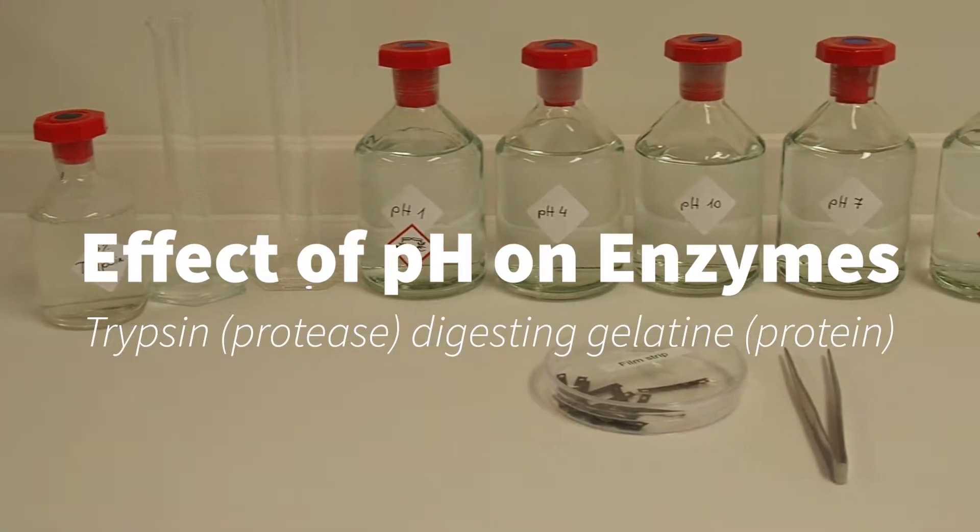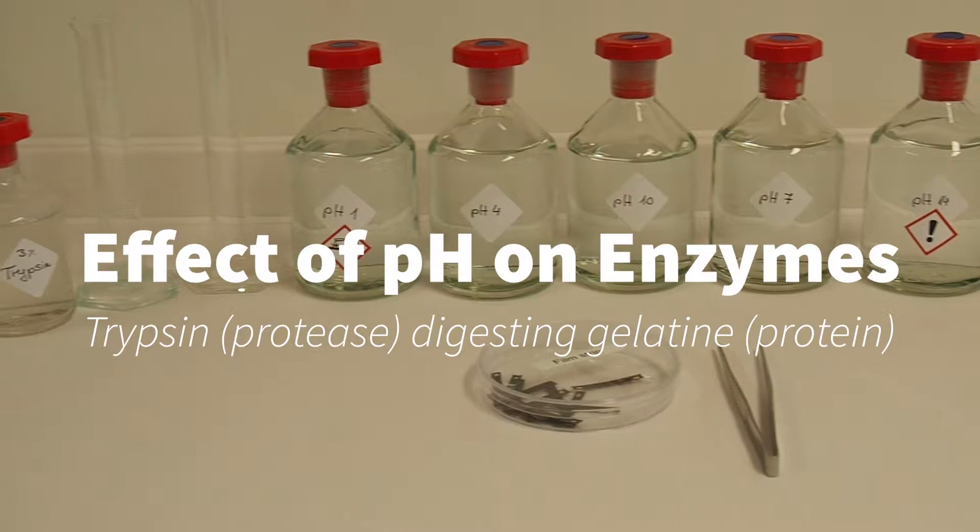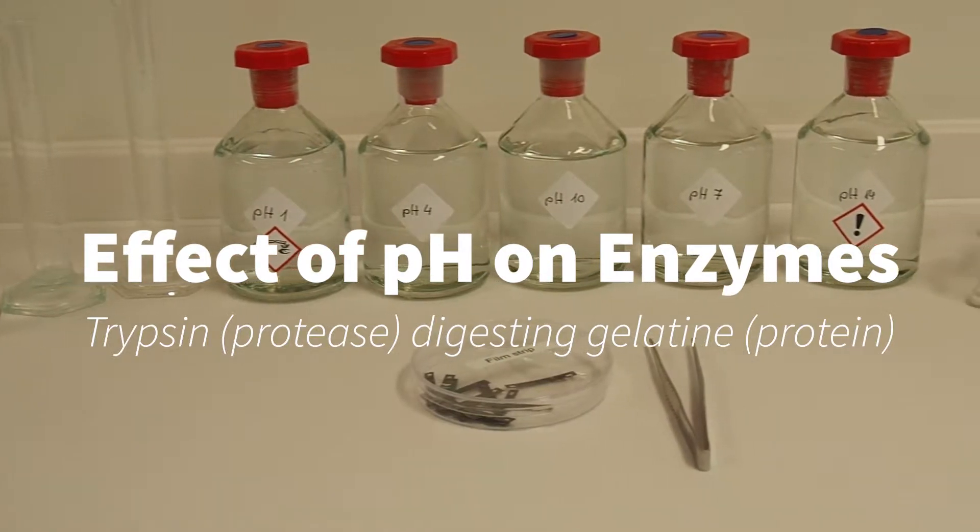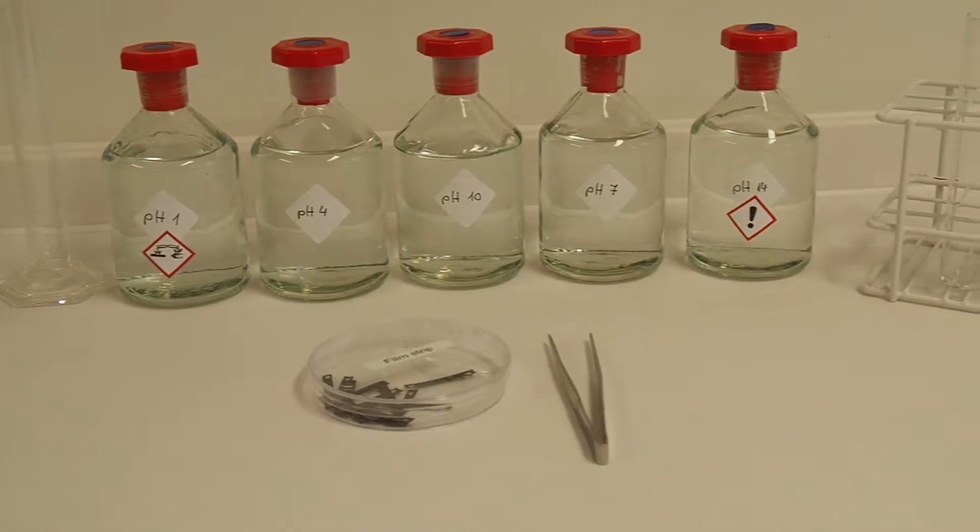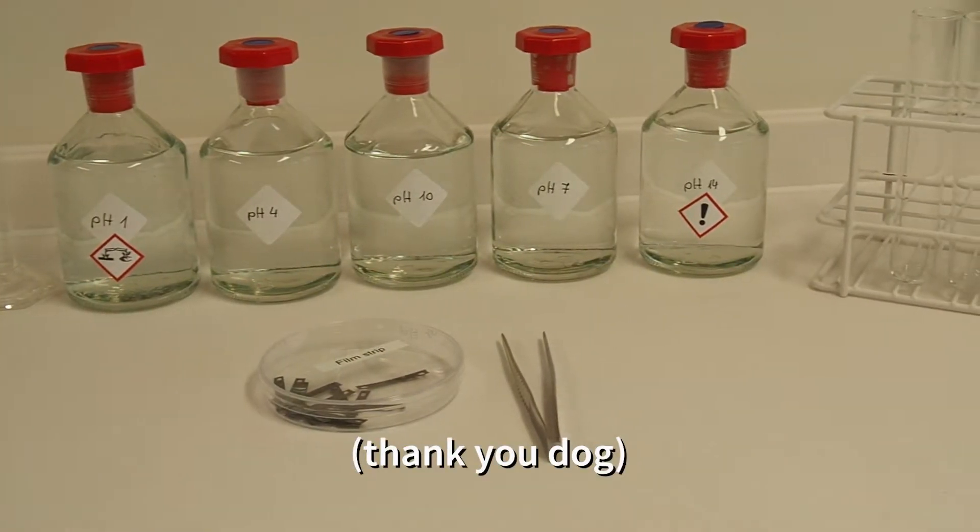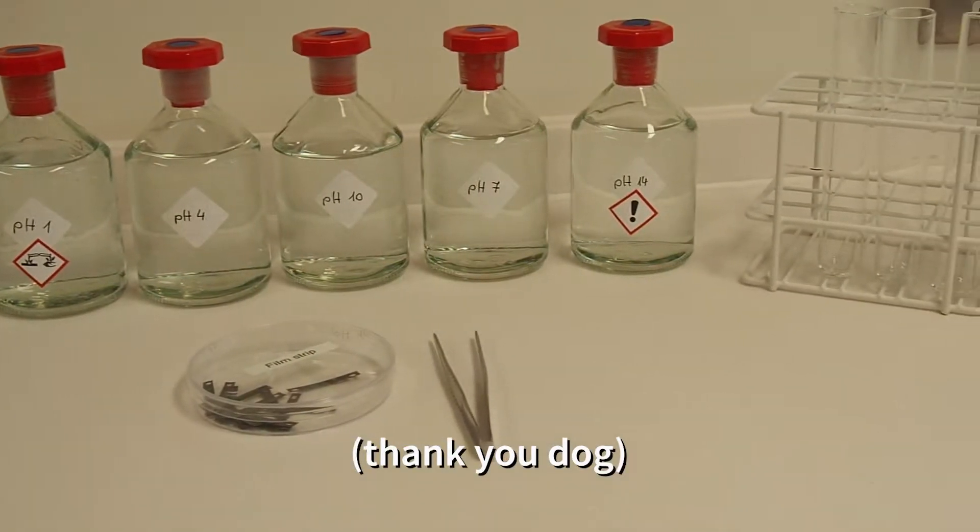Hello, welcome to this video on the effect of pH on enzyme activity. We're going to be looking at the specific example of the protease enzyme trypsin breaking down gelatin, a protein, at a range of different pHs.